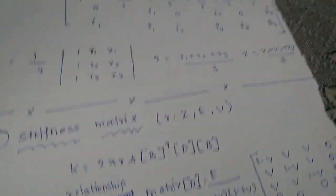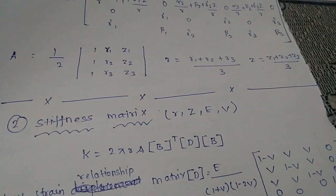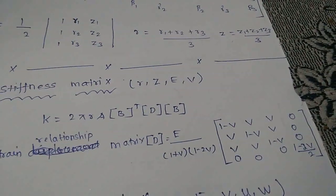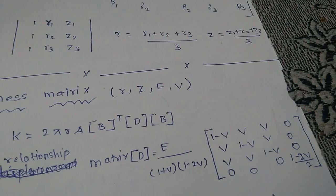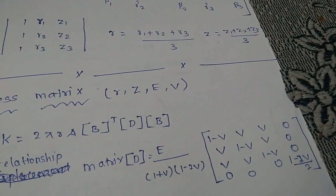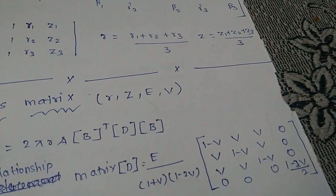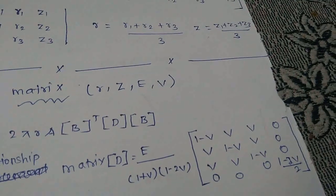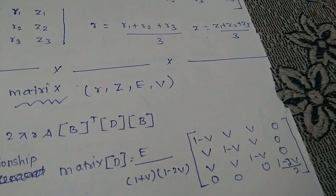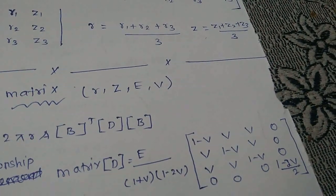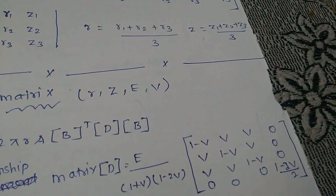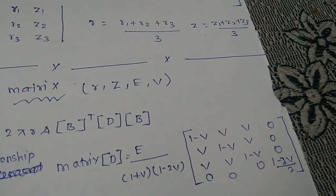We can use B for the formula. The D-matrix formula is: D equals E divided by (1 plus V)(1 minus 2V), multiplied by the matrix: [1-V, V, V, 0; V, 1-V, V, 0; V, V, 1-V, 0; 0, 0, 0, (1-2V)/2].